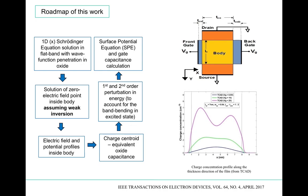Thereafter, we compute the location of the minimum potential point — the zero electric field point — inside the body of the device, as this plays a critical role in the entire model development. We assume weak inversion and develop a compact model for this minimum point, from which we can compute the electric field and potential. For brevity, I am only covering the modeling methodology overview; readers can download our paper for full mathematical details.